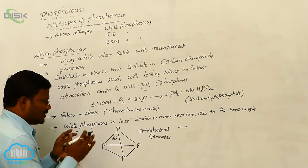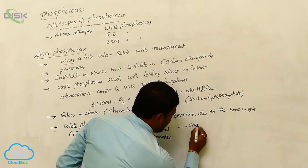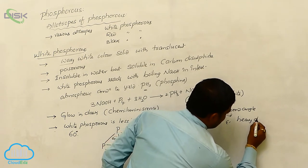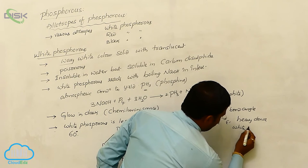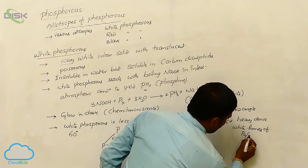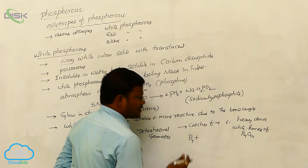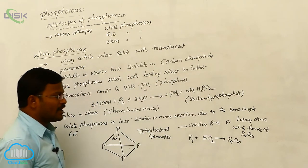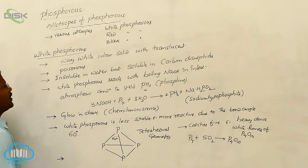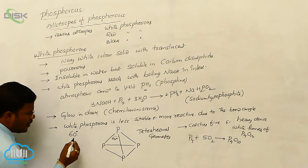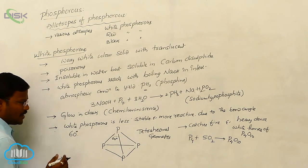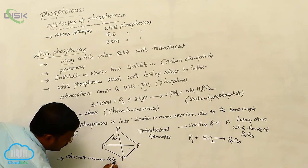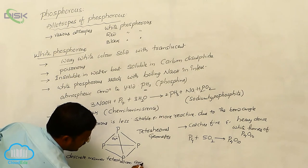White phosphorus easily catches fire and produces heavy dense white fumes of P₄O₁₀. All phosphorus molecules in white phosphorus are arranged in a discrete manner of tetrahedrons.